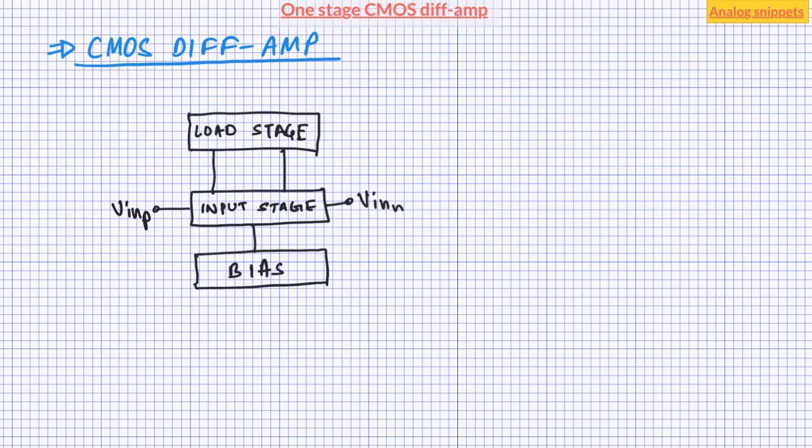Output is taken across the load stage. The input stage is also known as the transconductance stage because it converts the input differential voltage into differential current. The load stage converts this current back into voltage. The input pair determines most of the important properties of the diffamp, including gain, bandwidth, input common mode range, noise, and mismatch.